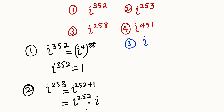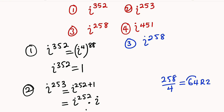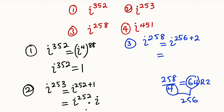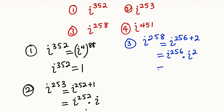The third one is i to the power of 258. First, we need to check whether 258 is a multiple of 4. 258 divided by 4 is exactly equal to 64 with a remainder of 2. This means that if we multiply 64 by 4, we are going to obtain 256. So this can be written as i to the power of 256 plus 2. From the same law of indices, this can be written as i to the power of 256 multiplied by i to the power of 2. 256 is a multiple of 4, therefore i to the power of 256 is equal to 1. But i to the power of 2, remember, is negative 1. Therefore, 1 multiplied by negative 1 is equal to negative 1.